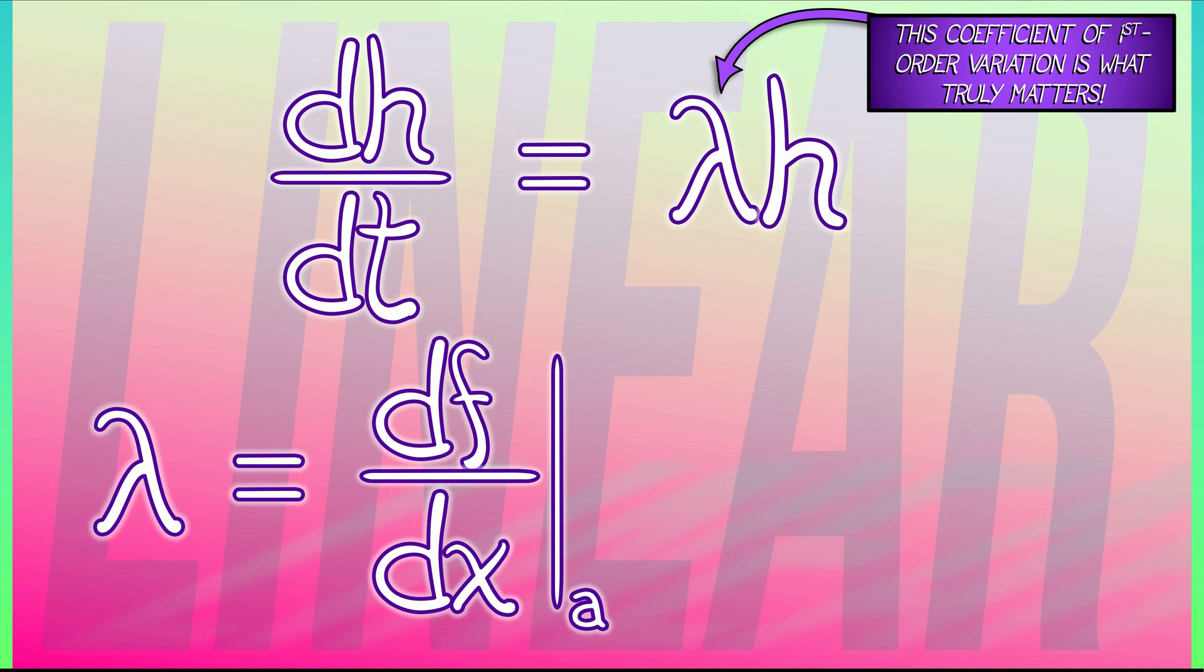h is evolving like e to the lambda t. So this lambda, this constant, the derivative of the right-hand side of the ODE with respect to x evaluated at a is what?